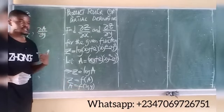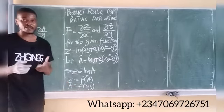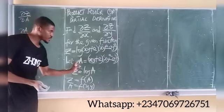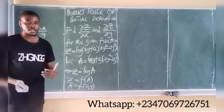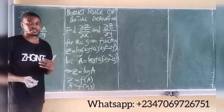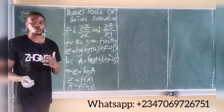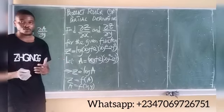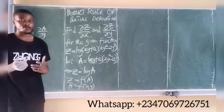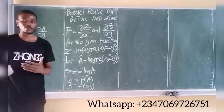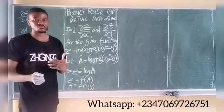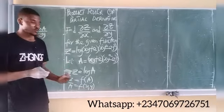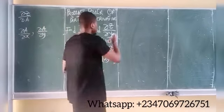This is called function of a function in differentiation — we have z to be a function of a, and a is a function of x and y. The only rule applicable to solving problems in function of a function is called the chain rule. Whenever one variable is a function of another, which in turn is a function of yet another variable, the only rule we apply is the chain rule of partial derivative.